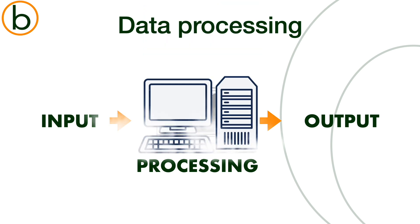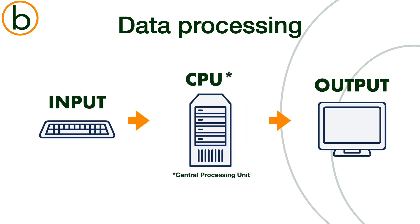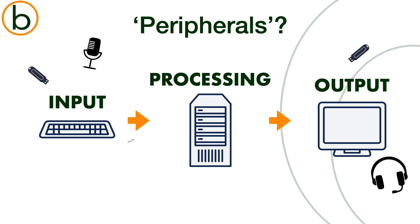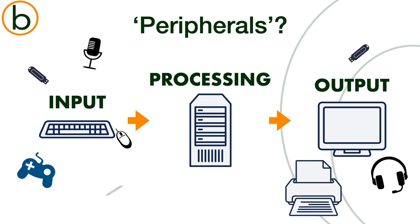Let's look at a basic, classic computer: a screen, a keyboard and a big box. The keyboard is for input, to enter data. The screen is for output, to read the information. The box is called the CPU, the Central Processing Unit. This is where the magic happens. Everything connected to the Central Processing Unit is called a peripheral. There are peripherals for input, such as a keyboard or a microphone. And there are peripherals for output, such as a screen or headphones.